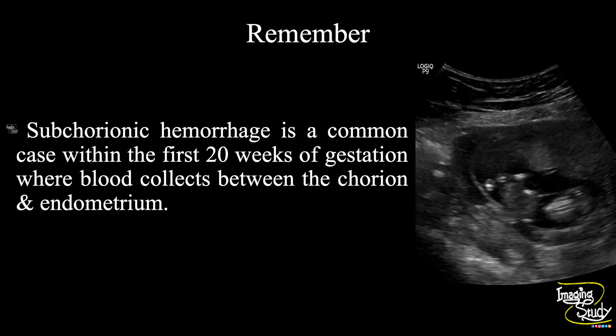Another take-home message: subchorionic hemorrhage is a common case within the first 20 weeks of gestation, where blood collects between the chorion and endometrium. These patients may not come to you with a history of per-vaginal bleeding; rather, they usually present with acute lower abdominal pain, or they may even be asymptomatic.